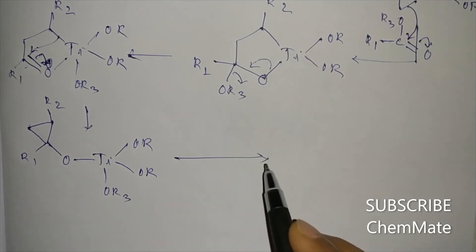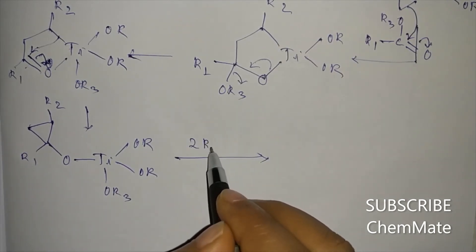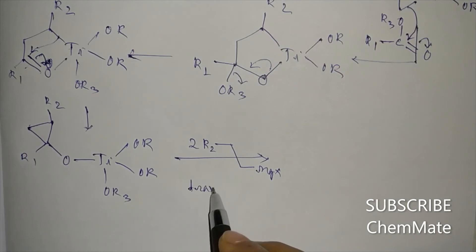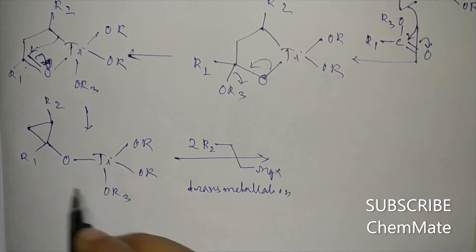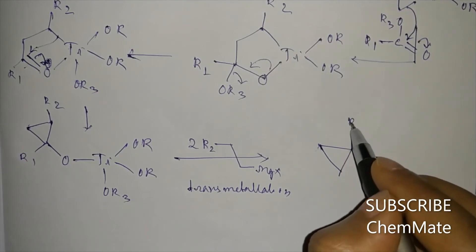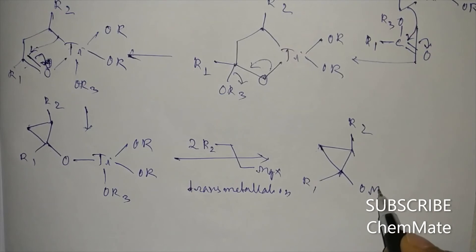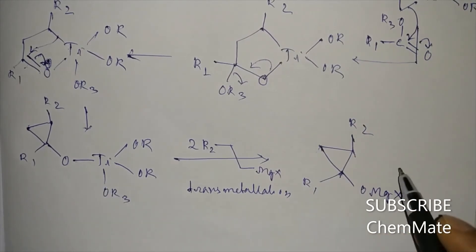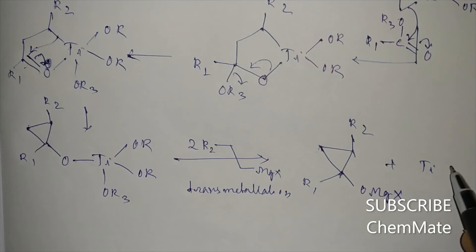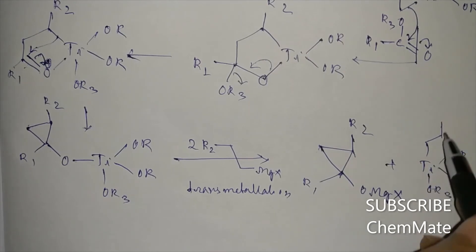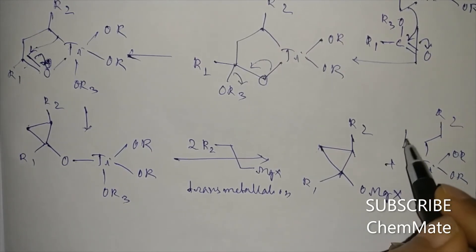Now another two molecules of R2-MgX undergo another transmetallation reaction. This replaces the ligand, giving R1-O-MgX plus the titanium species with O-R3 and O-R2 groups.